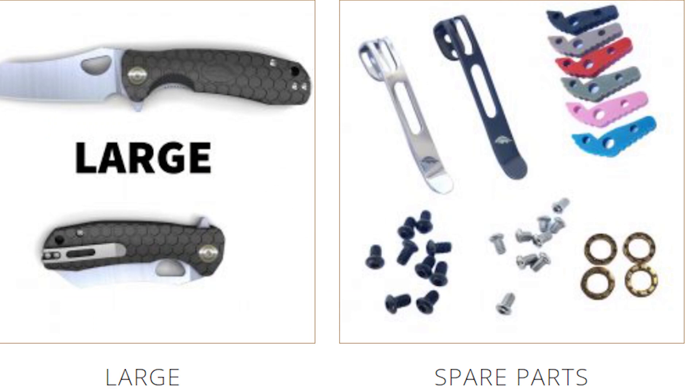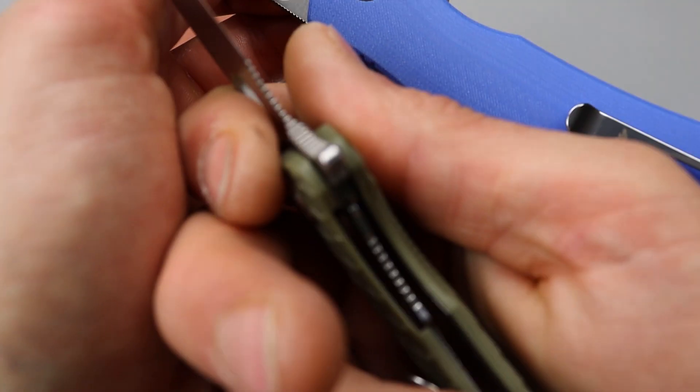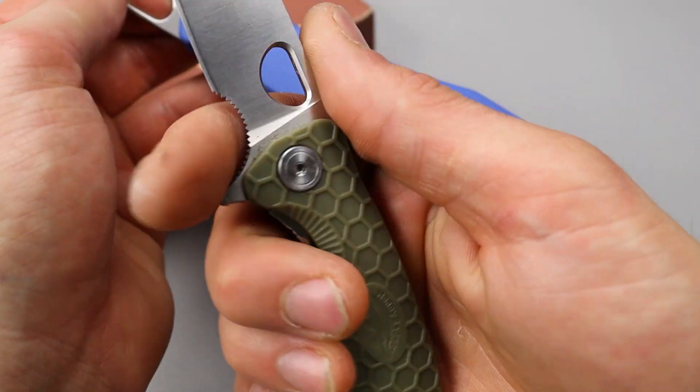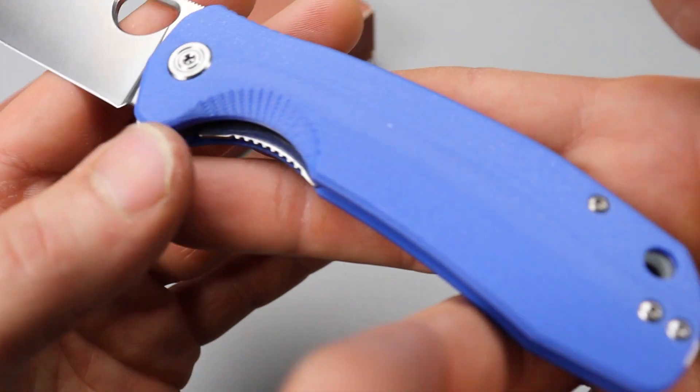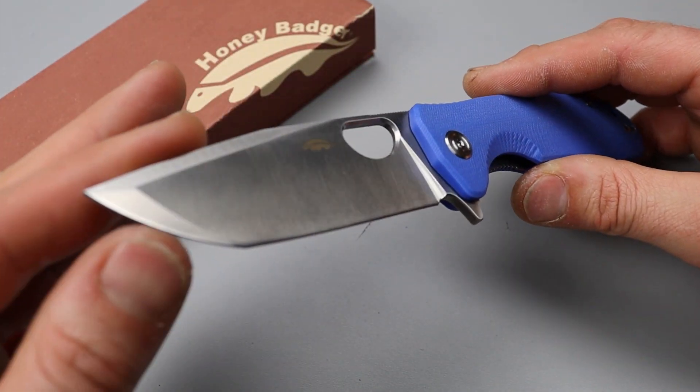Choil, choil-less. As you can see this one has the choil on it. Nice jimping too on the choil. Makes it nice and grippy. I really like that.